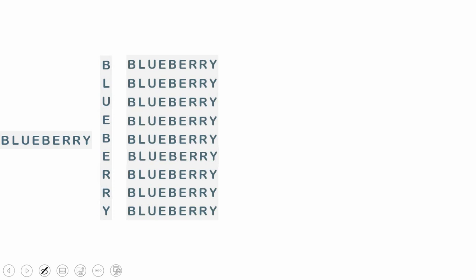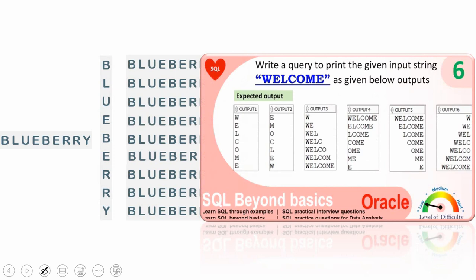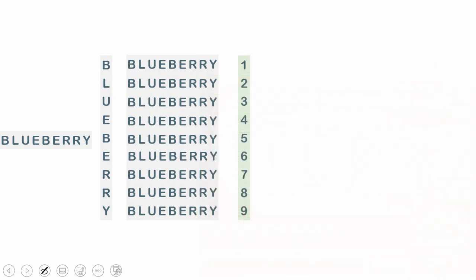The very first step is to convert this string into a row of characters, then print the string as-is in each row, and third, print the character position or row number. To convert a string into a row of characters, you can use the logic explained in a previous video where I showed how to convert a string into rows or pyramid structures. We are going to borrow that same logic here.